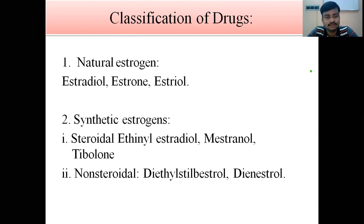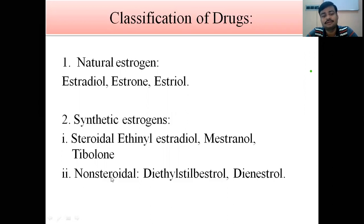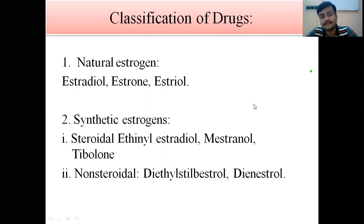Considering the classification of estrogen drugs, we generally classify estrogen into two basic categories: natural estrogen and synthetic estrogen. Under natural estrogens we have estradiol, estriol, and estrone. Under synthetic estrogens we have two subclasses: steroidal — such as ethinyl estradiol and dienestrol — and non-steroidal. Synthetic estrogens are more potent than natural estrogens.